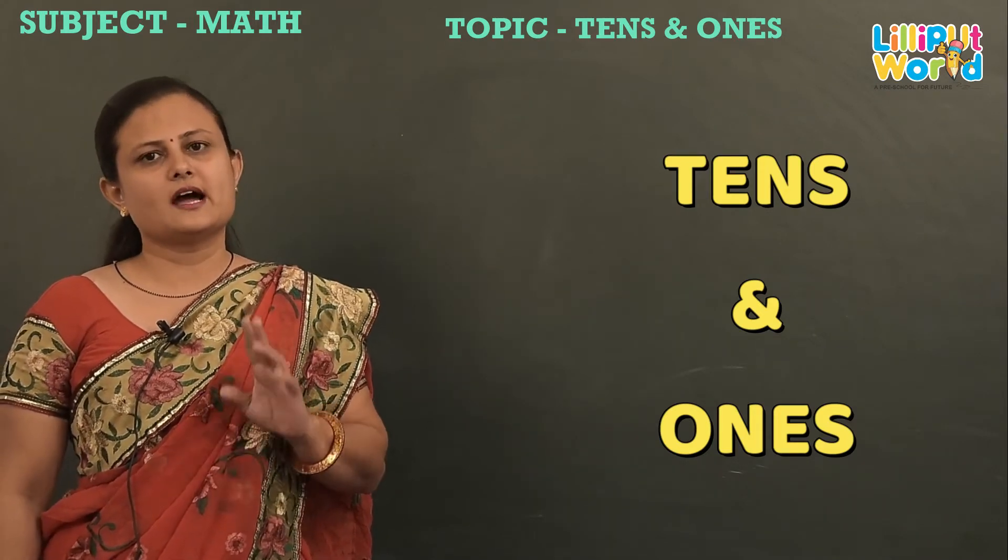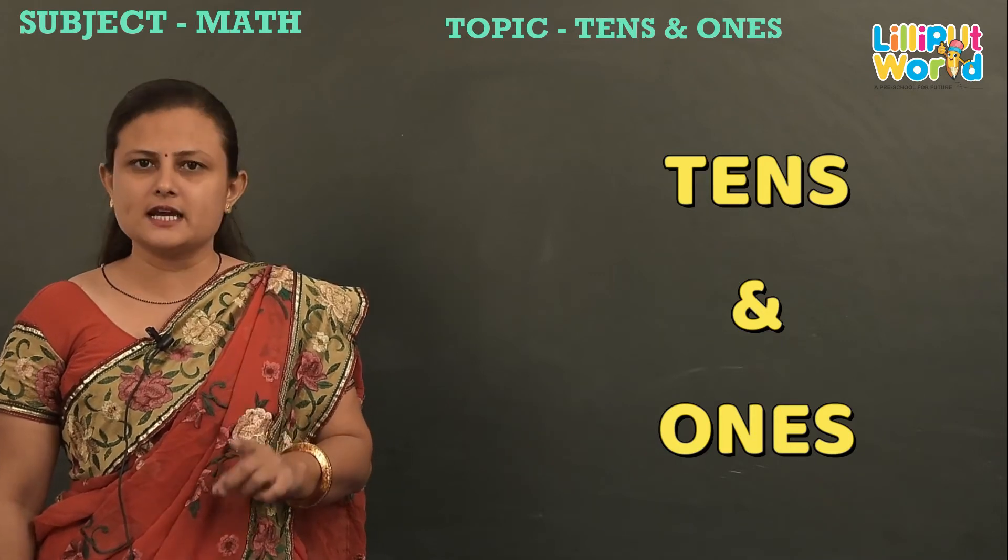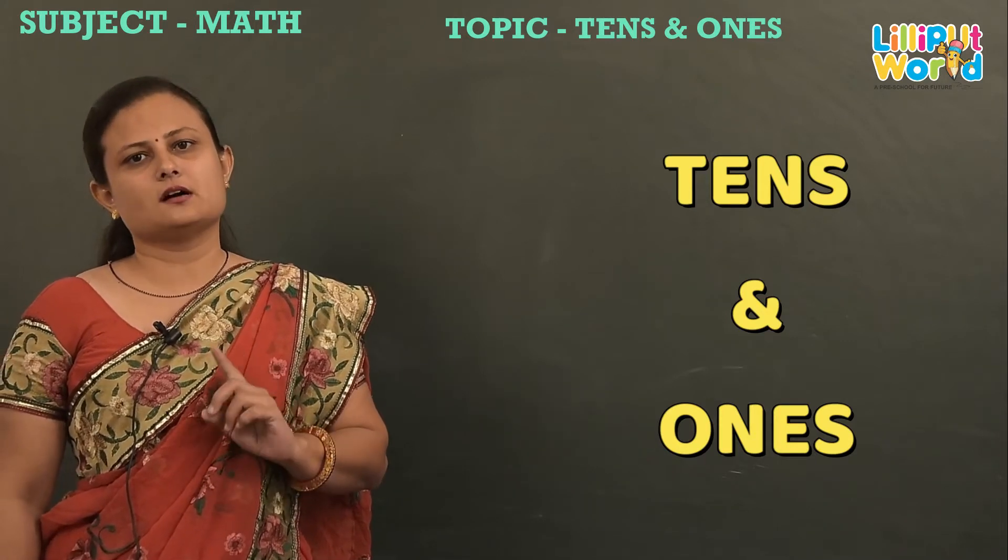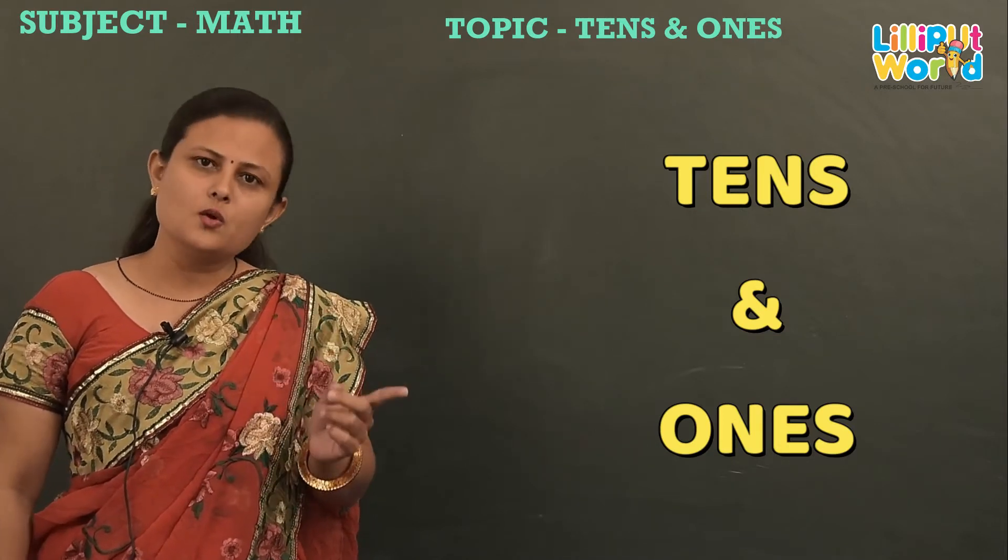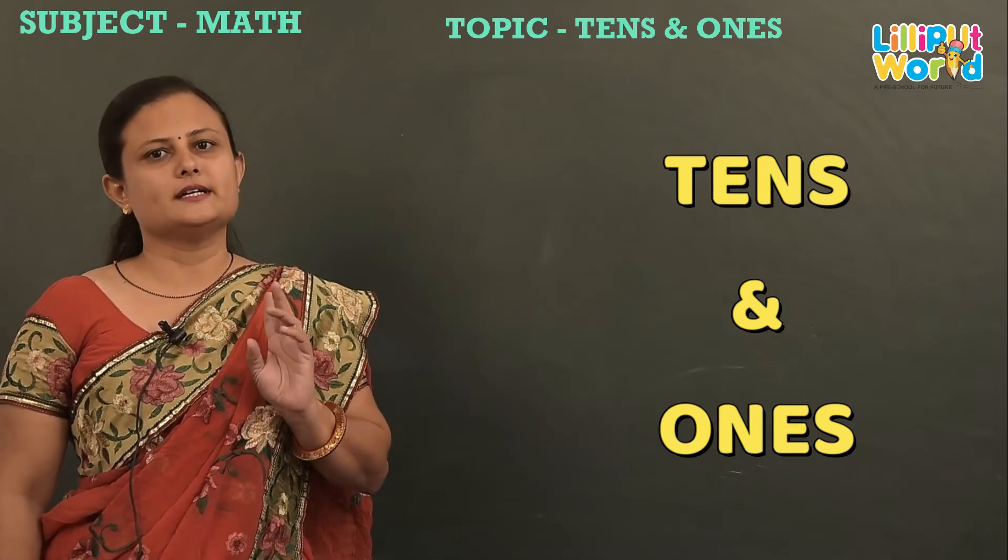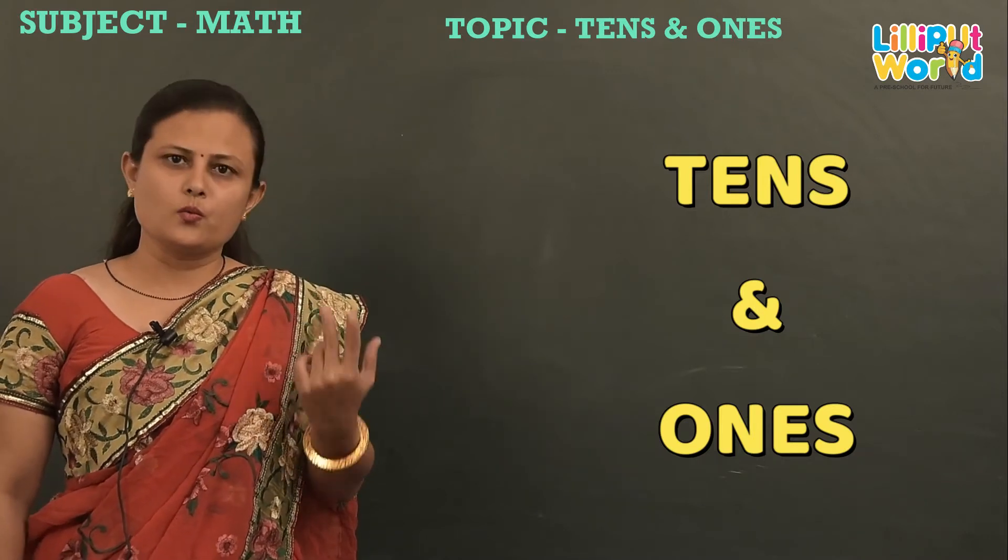Okay kids? So now if you want to write ten, so one is come in tens place and zero is come on ones place. So it's called tens and ones.